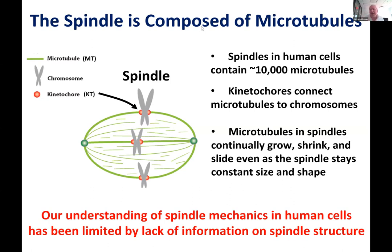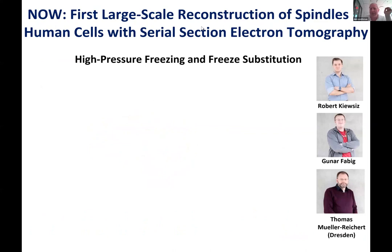Our understanding of spindle mechanics in human cells has been limited by a lack of information on spindle structure. That's been true for a long time, but now things are different, thanks to work by Thomas Mueller-Reichardt, Gunnar Fabig, and Robert, who did these following really phenomenal experiments.